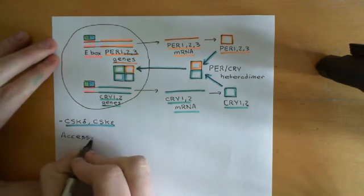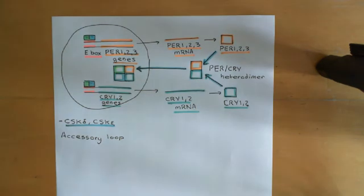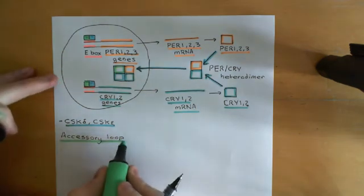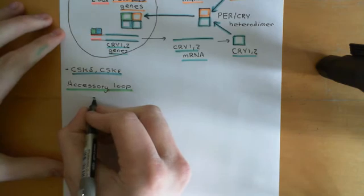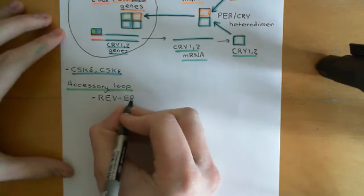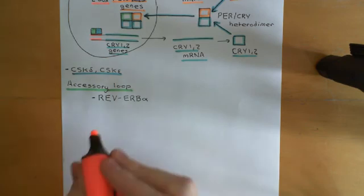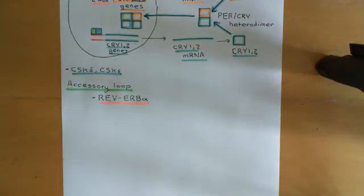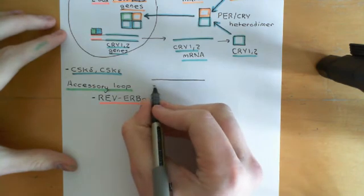This accessory loop is, as its name suggests, accessory — you do not need it. You can get rid of it and this system still works absolutely fine. It just helps it out. This accessory loop involves a protein we haven't come across yet, which is called REV-ERB-alpha. Its gene is under the control of BMAL1/CLOCK/NPAS2 heterodimers as well, and just like period and cryptochrome genes, it too has one of these special e-boxes in its gene control region.